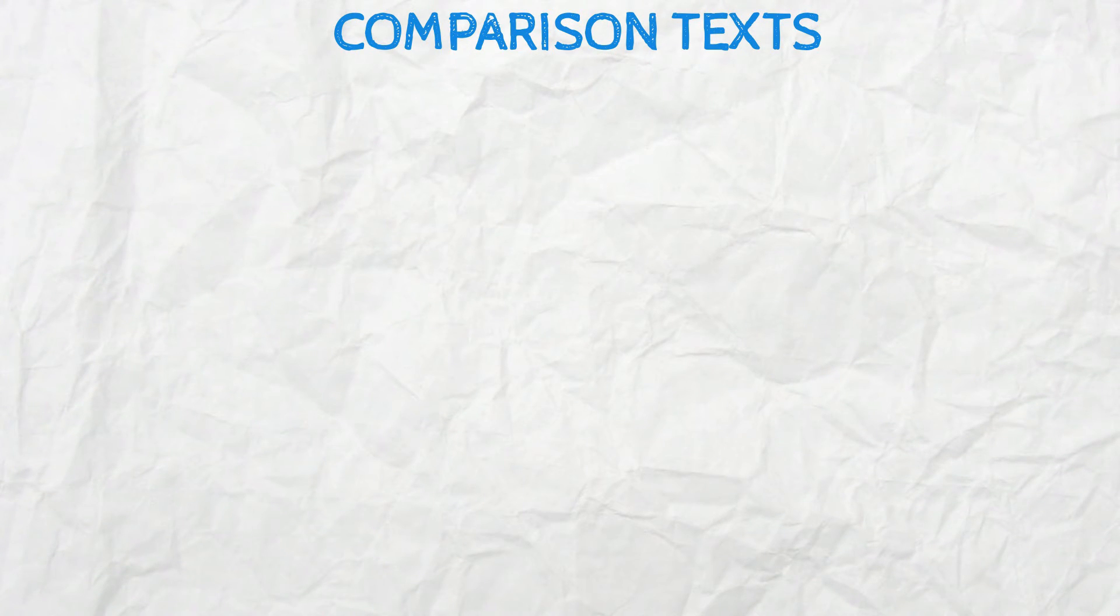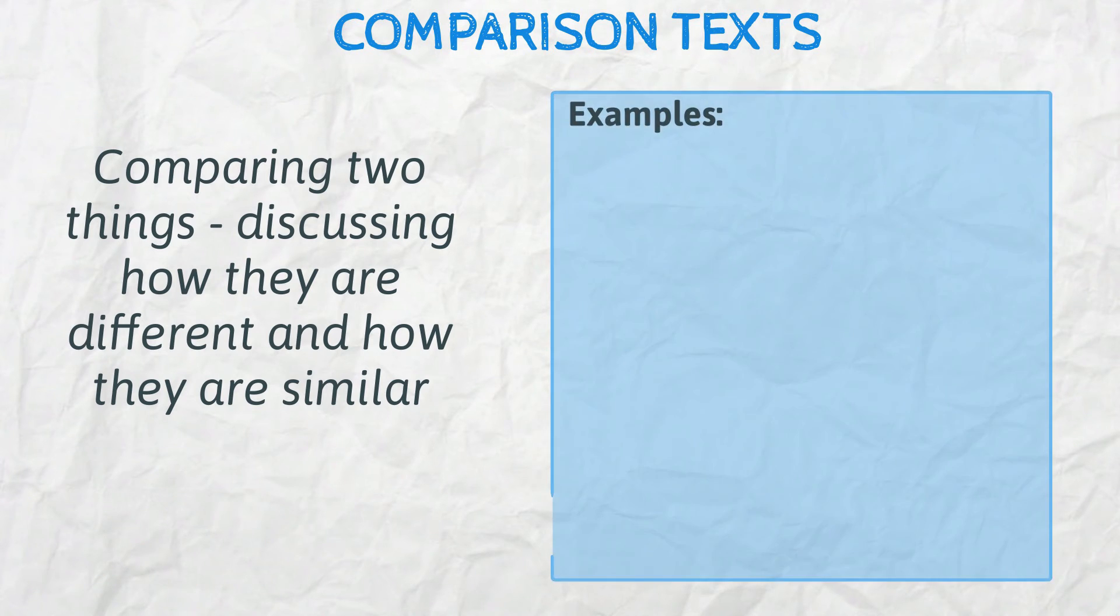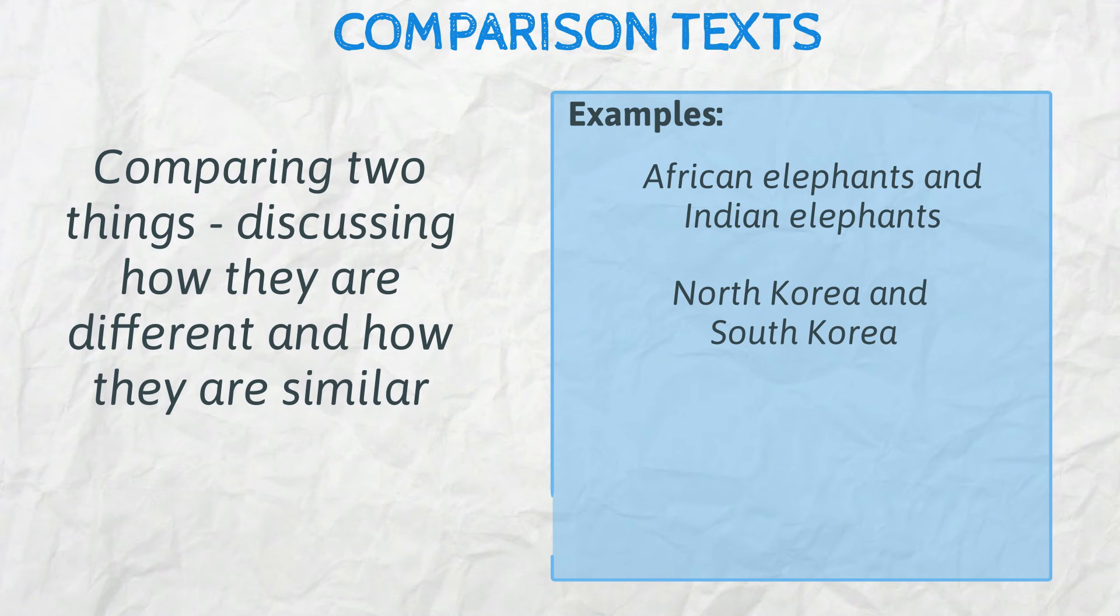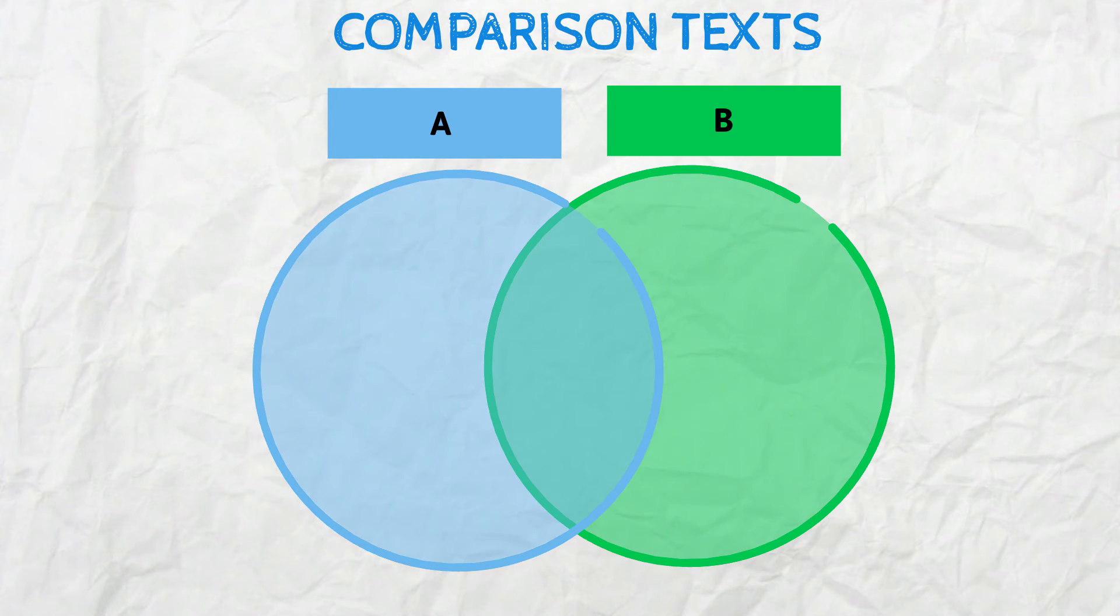Comparison texts. This is when you compare two things and discuss how they're different and how they are similar. For example, you could write a comparison between African elephants and Indian elephants, North Korea compared with South Korea, baseball versus cricket, or simply take two characters from a novel and compare them. A good way to plan a comparison text is to use a Venn diagram. This is better than a table because as well as noting how things are different to each other, it gives you space to show how they are similar.